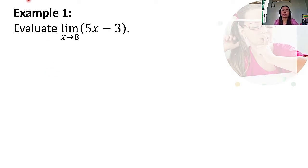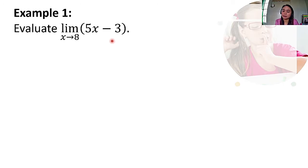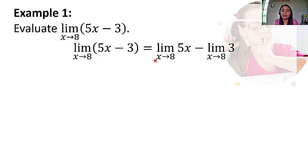Let's proceed with our examples. Example number 1: evaluate the limit of 5X minus 3 as X approaches 8. We can apply the previously discussed theorems. First, we can use the addition theorem — since subtraction is included — to separate this into the limit of 5X as X approaches 8 minus the limit of 3 as X approaches 8.